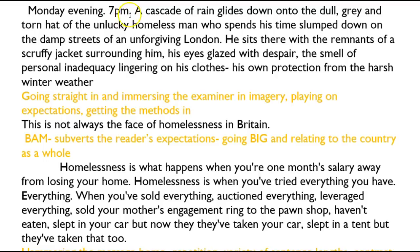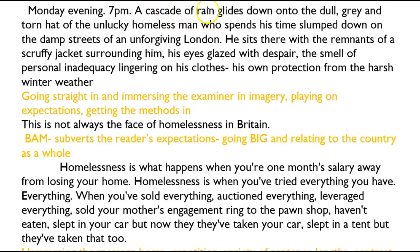Then we get this long descriptive sentence as a contrast, where Kimi is saying to the examiner: look, I can't just do short sentences — I can wow you with something impressive as well. Let's look at the power of verbs, because verbs are what's going to give your writing power. The rain 'glides down' — that's a contrast with how the homeless man is feeling. He's unlucky, but the rain feels smooth and almost happy. He 'slumped down' — a really powerful verb that lets us know how vulnerable he is.